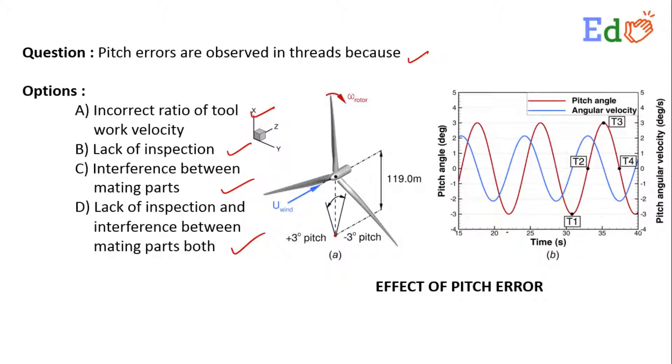Here's a figure showing a mismatching of the cutting velocity between workpiece and tool. So option A, that is incorrect ratio of tool work velocity, is the correct answer. Thank you.